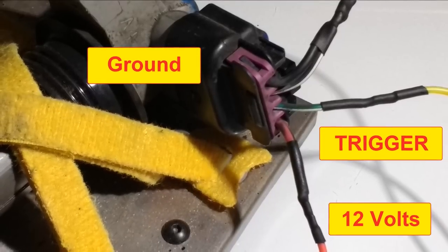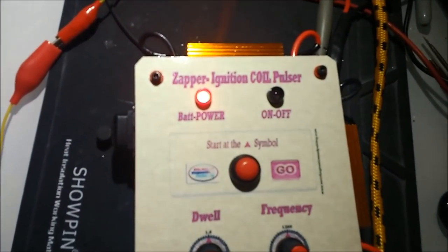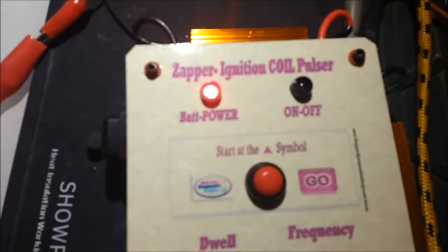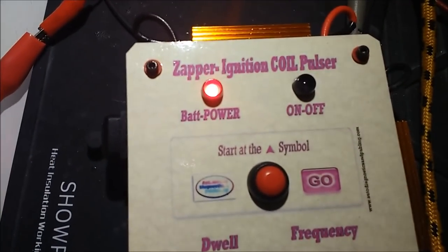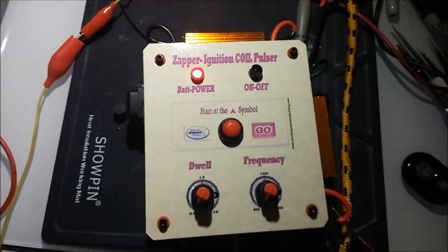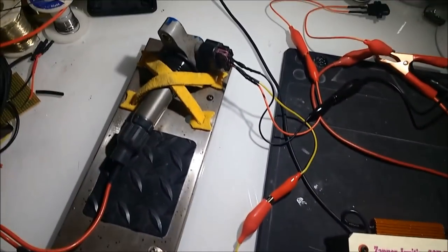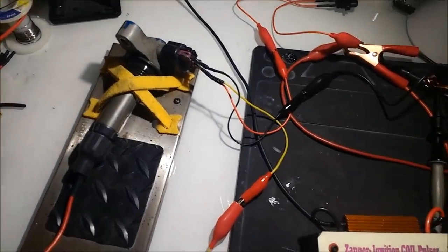As you can see on screen, the Zapper is already assembled and connected. The Zapper is a unit that we designed from the ground up. It does two things: it'll trigger ignition coils directly through a very high current output.